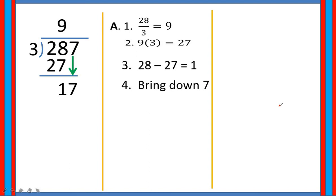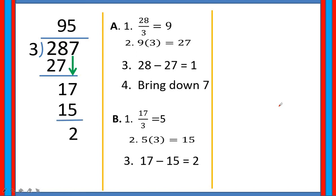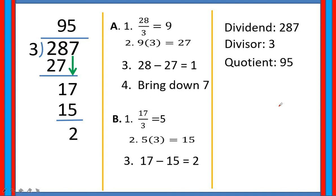So, 17 divided by 3, that is equal to 5. And then 5 times 3 is equal to 15. And 17 minus 15 is equal to 2. That ends our division process. Again, our dividend is 287, the divisor is 3, the quotient is 95, and the remainder is 2.